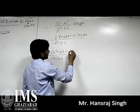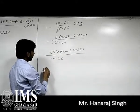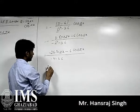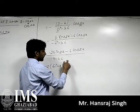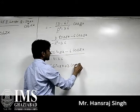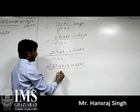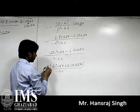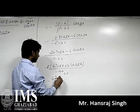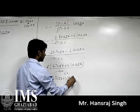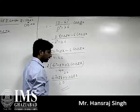So we have minus 1 upon minus 40, times (minus 2 sin(2x) minus 6 cos(2x)). Taking minus 2 common: minus 2 sin(2x) and minus 6 cos(2x). After simplification, numerator is (sin(2x) + 3 cos(2x)) and denominator is minus 20. This is the particular integral of the main problem.